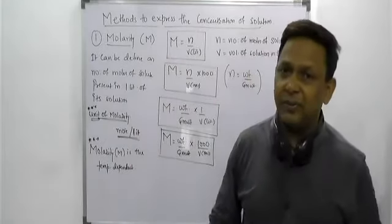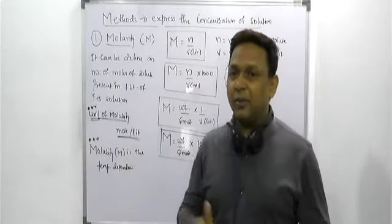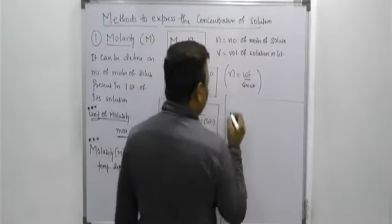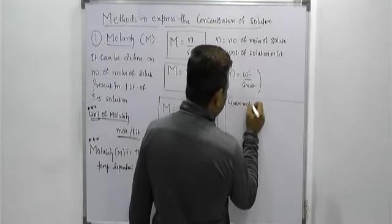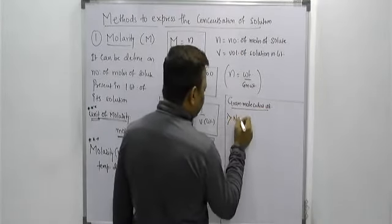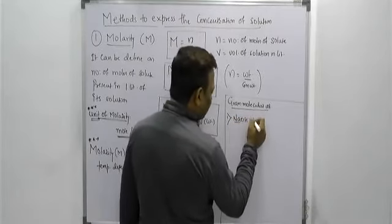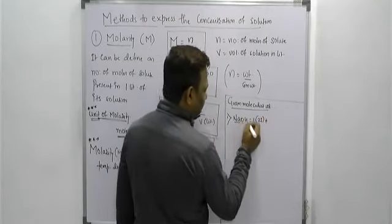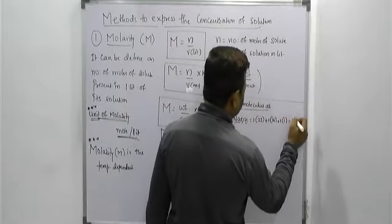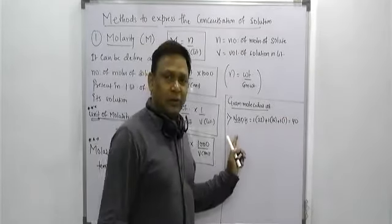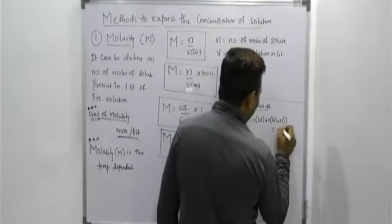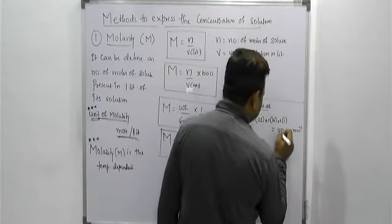These are the formulas, definitions, units, and the fact that molarity is temperature dependent. Before doing numericals, we need to know the gram molecular weight of compounds. For example, NaOH: sodium is 1 atom with atomic weight 23, plus oxygen is 16, plus hydrogen is 1 — that equals 40. So the gram molecular weight of NaOH is 40 grams per mole.